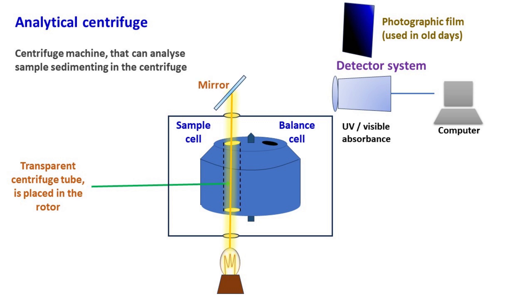The top of the centrifuge chamber has a mirror that reflects light to the detector system. The detector system can measure the absorbance of UV or visible light. Besides UV and visible light, it can also detect changes in the refractive index of the sample.